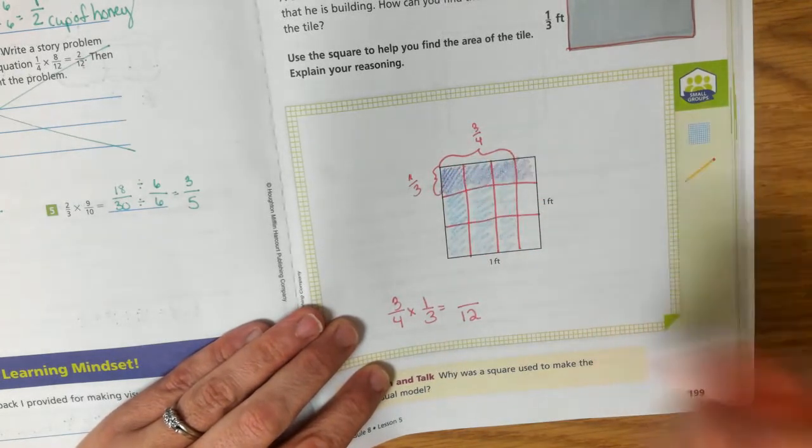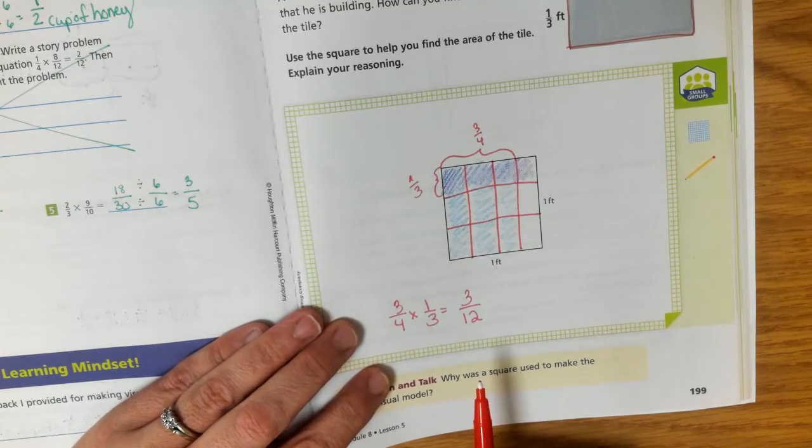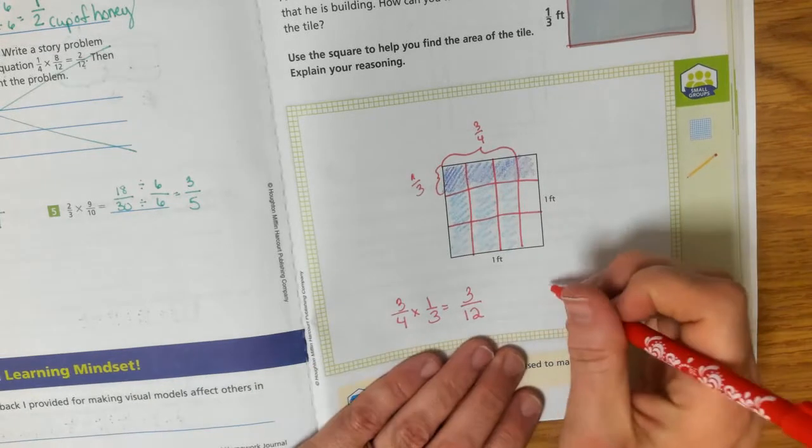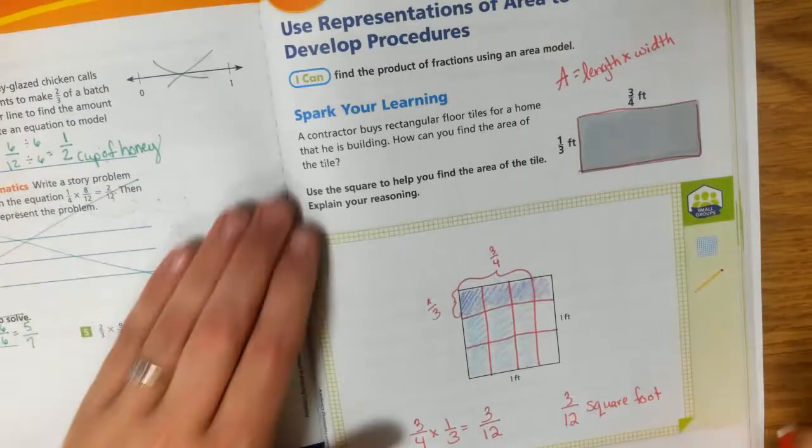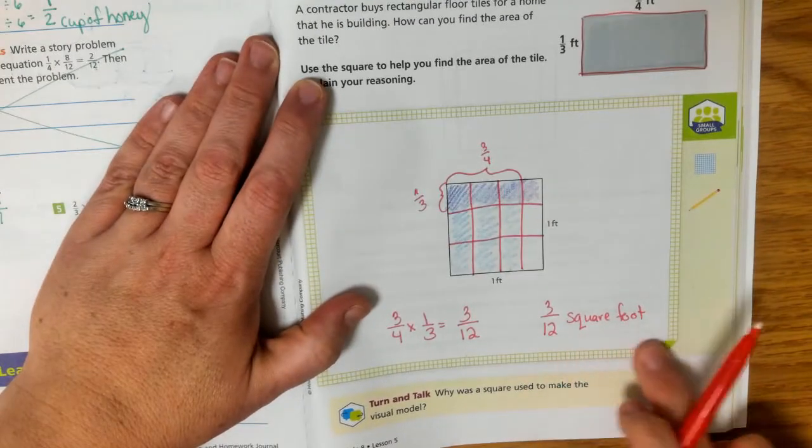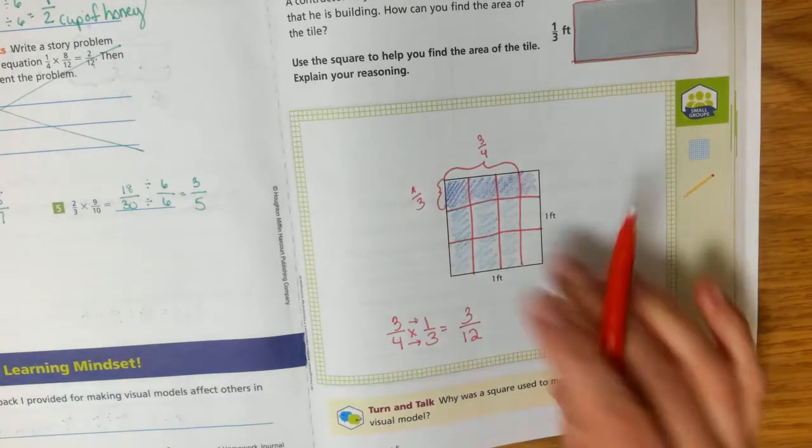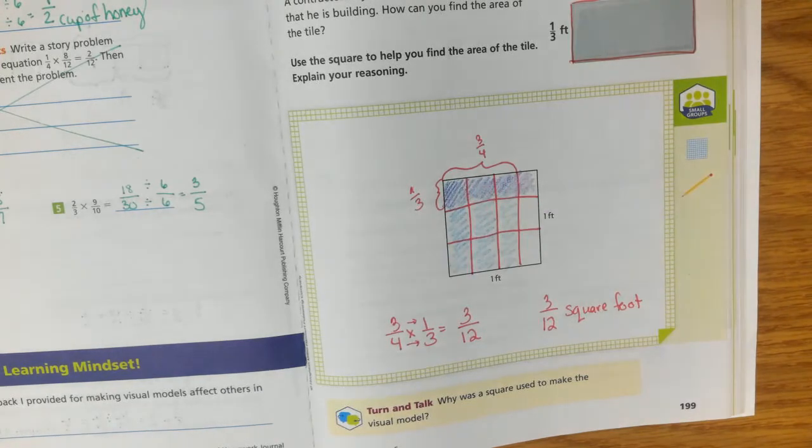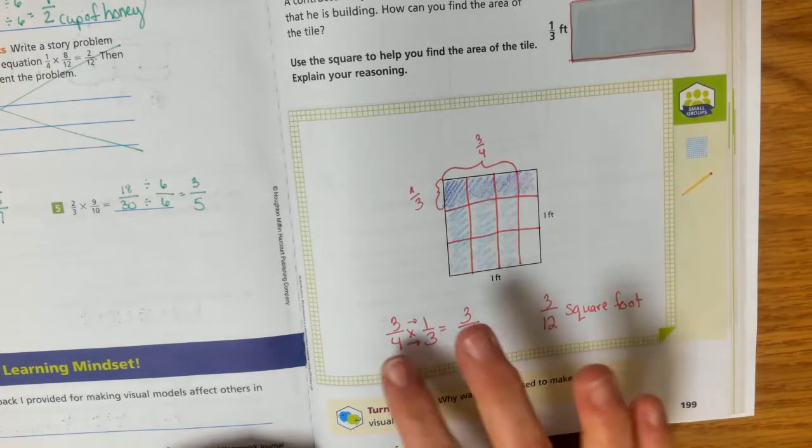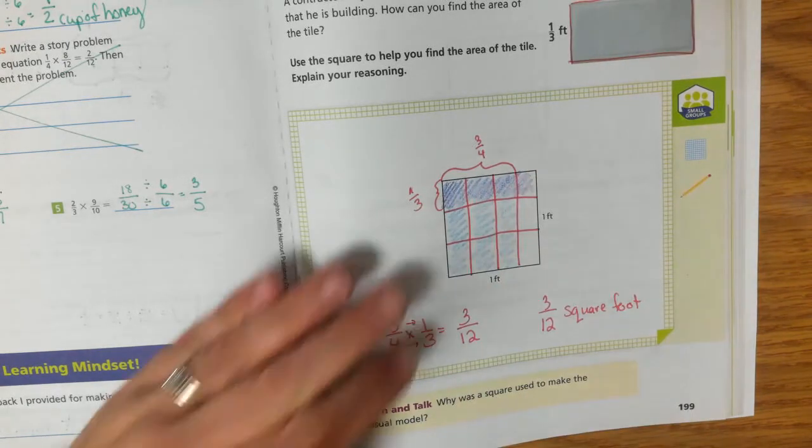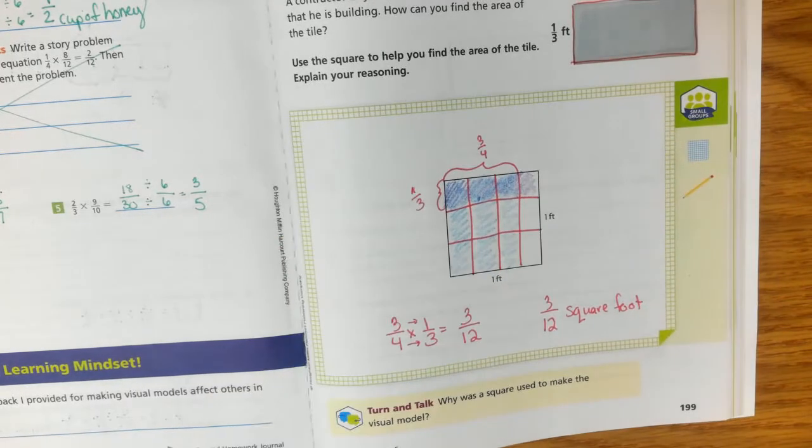And how many overlap? One, two, three overlap. So the area that's represented by the parts of the model that are shaded in twice, twice, that would equal three twelfths square foot. So the area of the tile is three twelfths square foot. So basically what I'm doing is I'm multiplying my bottom and I'm multiplying my top. I'm showing this to you in a picture form, so hopefully you can see why it works that way.